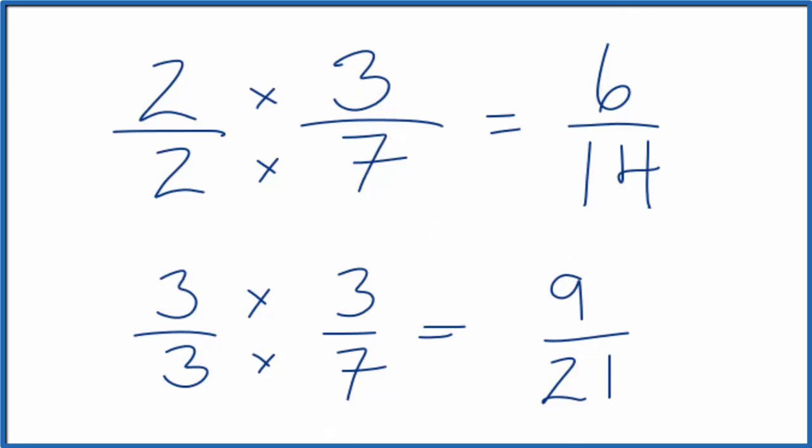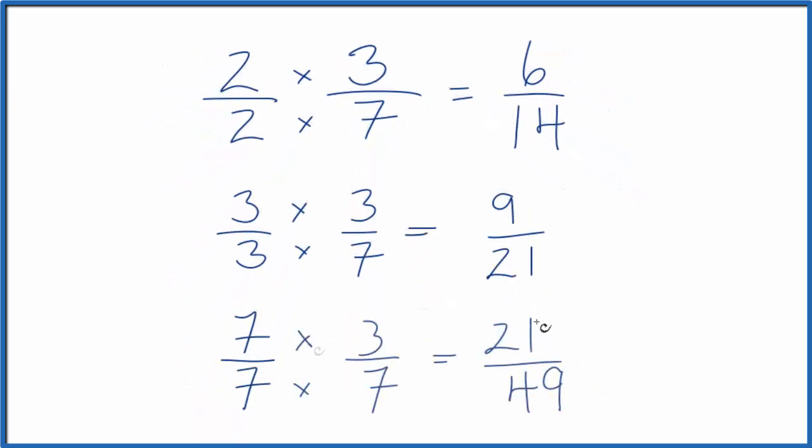One last one. How about 7 over 7? So 21 forty-ninths, that's an equivalent fraction to 3 sevenths as well. This is Dr. B looking at a few equivalent fractions for 3 sevenths. Thanks for watching.